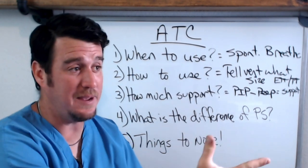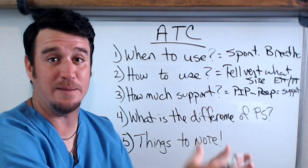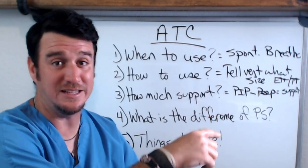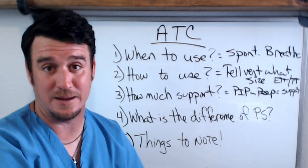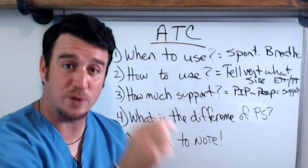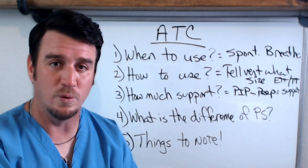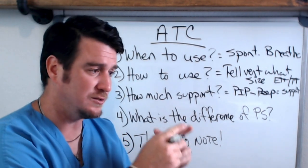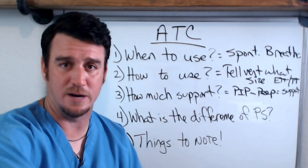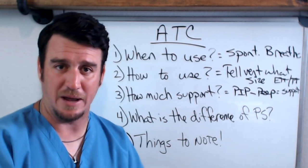If the same patient has an 8.0 endotracheal tube and then the next day gets trached with an 8.0 tracheostomy tube, pressure support of 5 for the ET tube and pressure support of 5 for the tracheostomy tube are not the same. But if you change your ATC from an endotracheal tube to a tracheostomy tube, you will see that your support should go down because your airway resistance is less with the tracheostomy tube. Be sure to leave a comment below if that doesn't make sense.